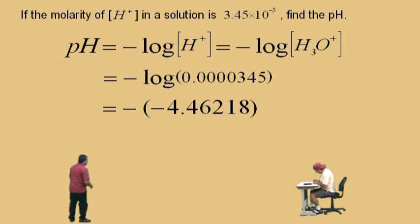Now, remember, what's the opposite of negative 4.46218? Positive 4.462. Notice here we're rounding to the nearest thousands.